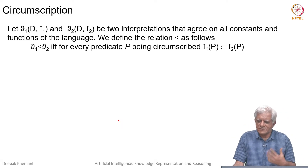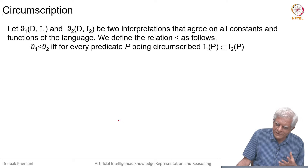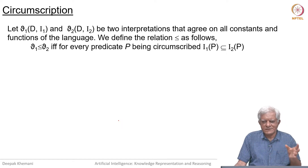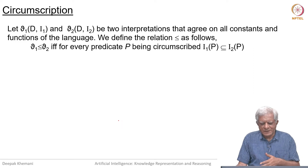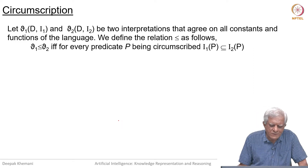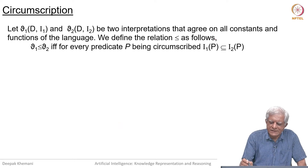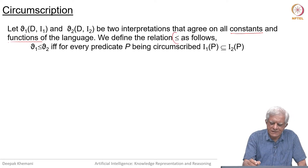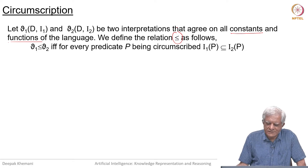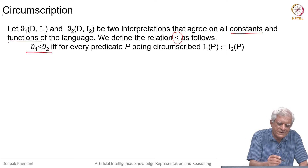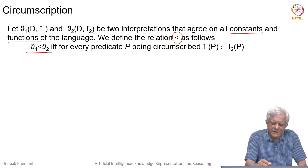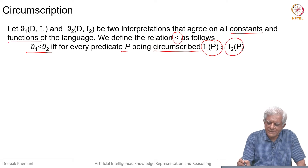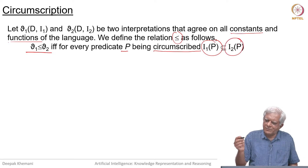We need to define a notion of an ordering of interpretations. Remember that an interpretation is a domain and a mapping from the set of relation symbols, function symbols, and constant symbols to the domain. Let I1 and I2 be two interpretations such that they agree on all constants and functions of the language. We define the relation less-than-or-equal-to as follows: I1 is less than or equal to I2 if, for every predicate P that is being circumscribed, the image of P in I1 is contained in the image of P in I2.